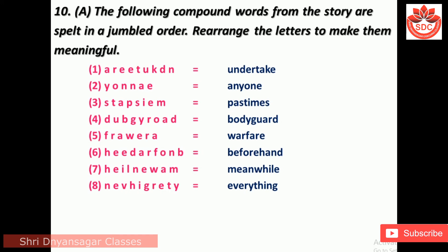Question 10A: The following compound words from the story are spelt in a jumble. Rearrange the letters to make them meaningful. The answers are: 1. underdeck, 2. anyone, 3. pastimes, 4. bodyguards, 5. warfare, 6. beforehand, 7. meanwhile, 8. everything.